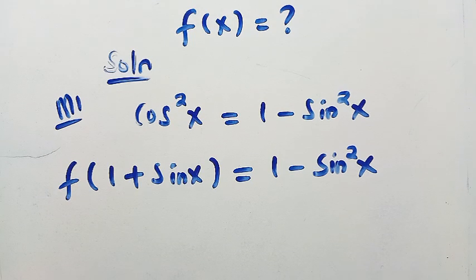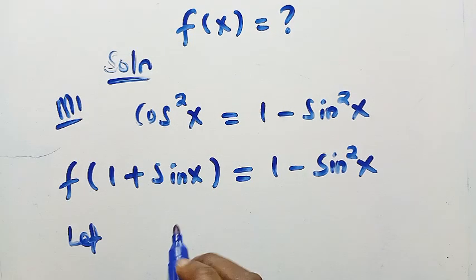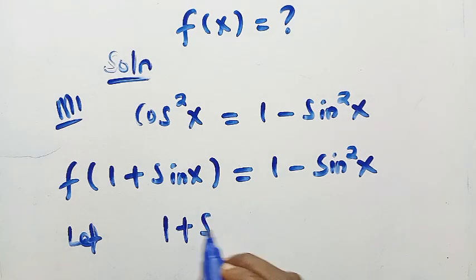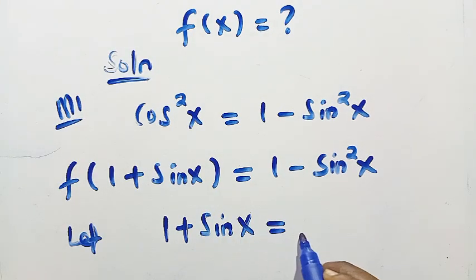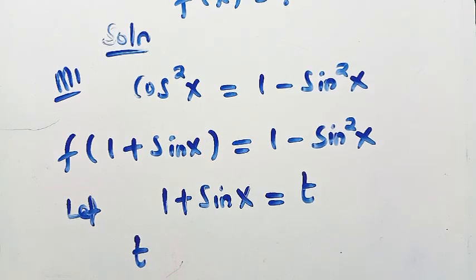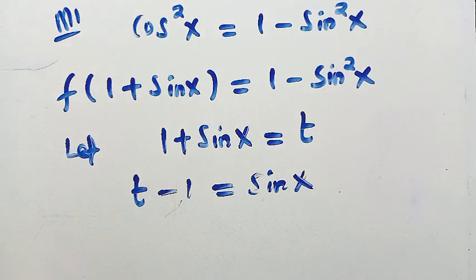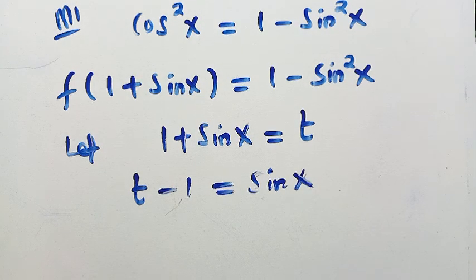After getting this, we let one plus sine x equal another letter. I choose t, so we have one plus sine x equals t. Making sine x the subject gives us sine x equals t minus one.